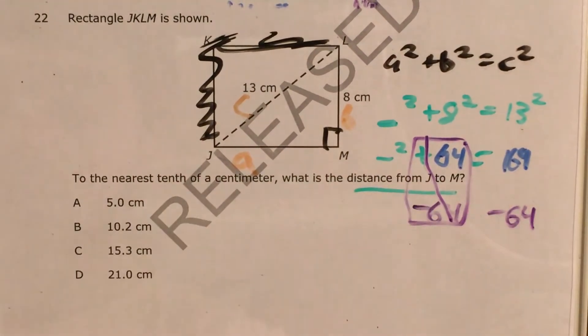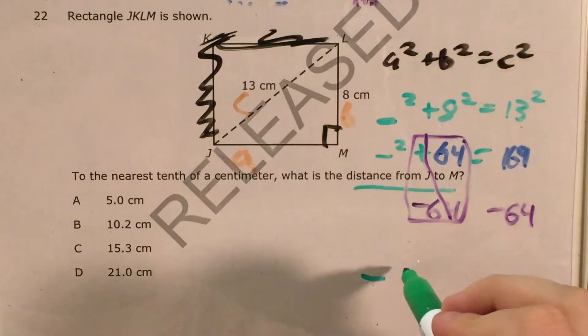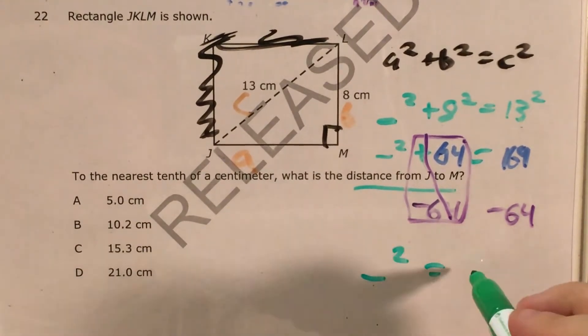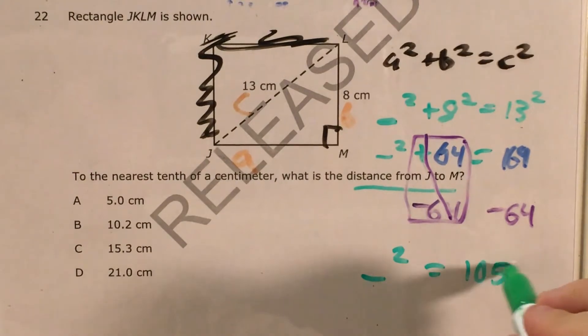So I'm going to go ahead and start with minus 64 minus 64. Plus 64 and minus 64 will go away, leaving me just with whatever it is squared. And that equals 169 minus 64 equals 105.